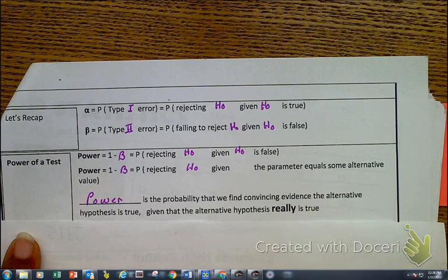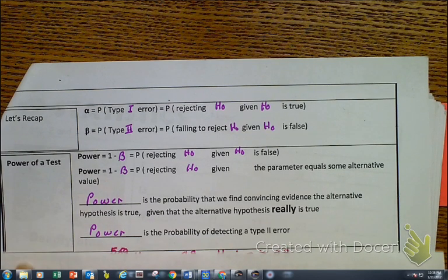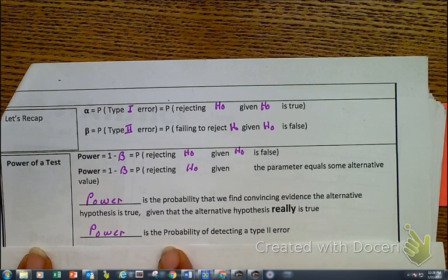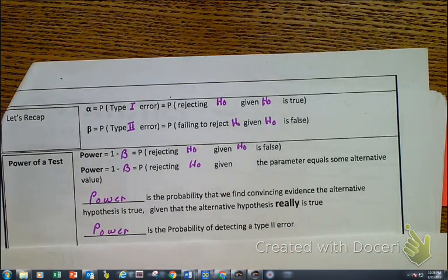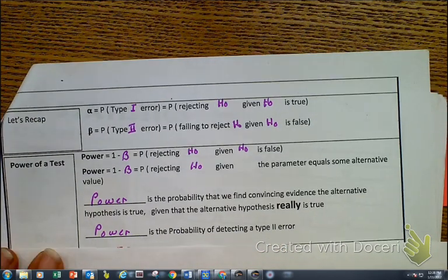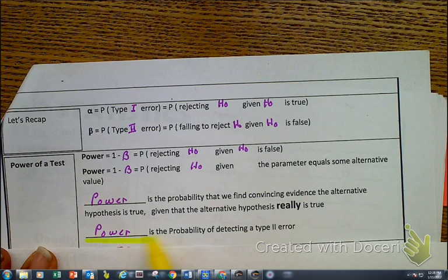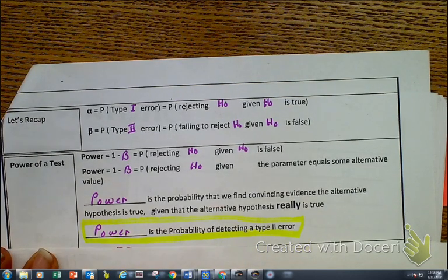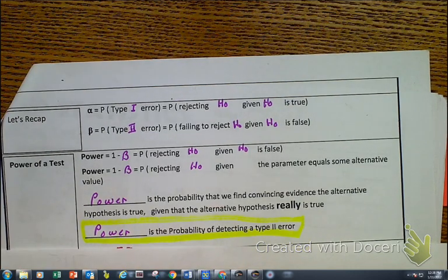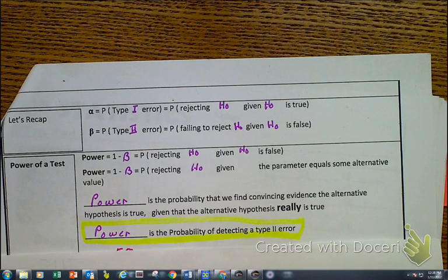You might have to rewind that to listen again. Power is the probability of detecting a type 2 error. That, in a nutshell, is the bottom line. So let's jump to an example.